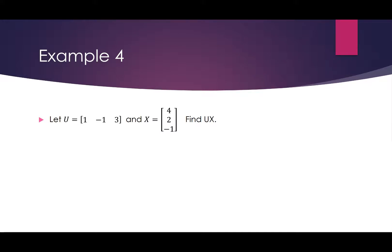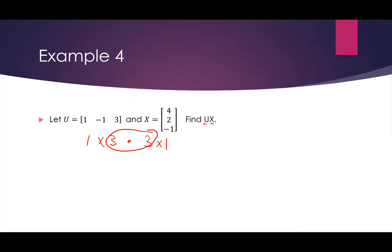Let's try Example 4: u times x. Notice that u is a 1 by 3 matrix, and we're doing u times x — remember, u times x will not be the same as x times u. U times x is a 1 by 3 matrix times a 3 by 1 matrix. We can multiply these together because the two middle values are both 3, so they match. And what will we be left with? My answer will simply be a 1 by 1 matrix.